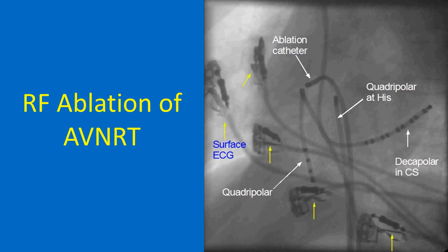The distal electrodes record potentials from the left atrium. One quadripolar catheter is positioned in the region of the bundle of His, and another in the right ventricle. All electrode pairs are connected to a junction box and through it to the EP recorder, where recordings from all electrode pairs are displayed.